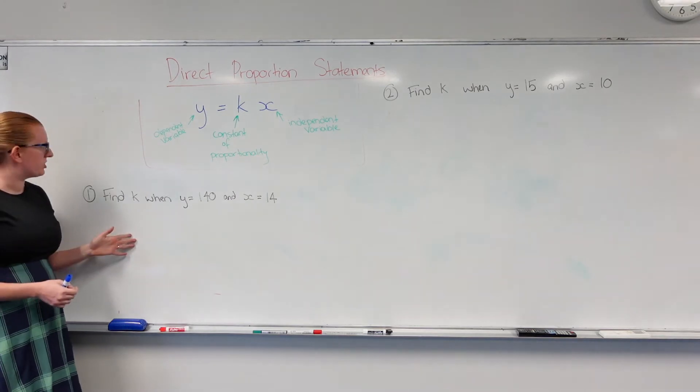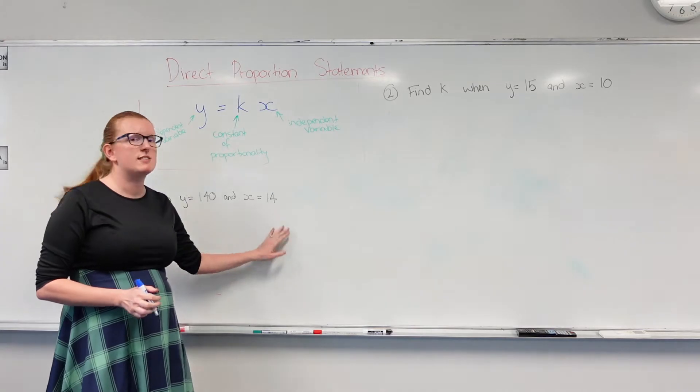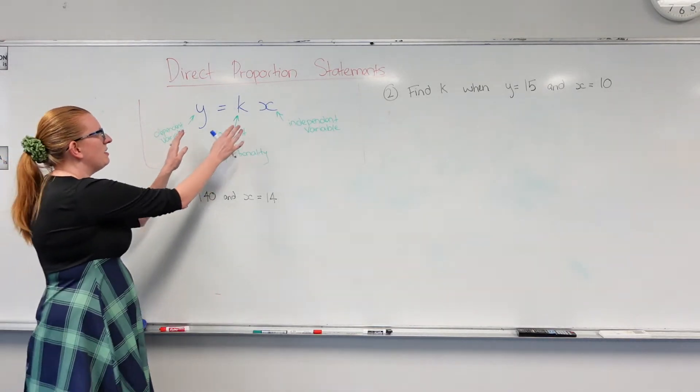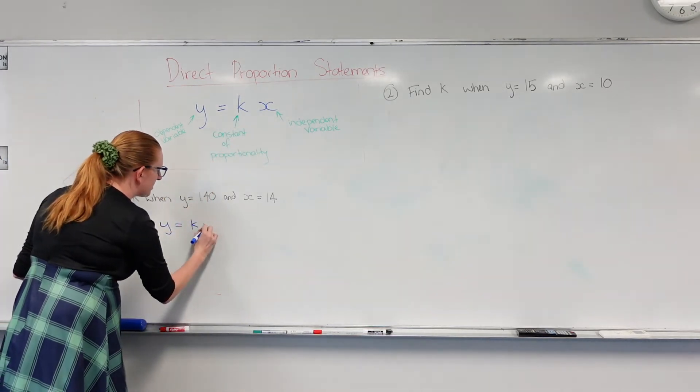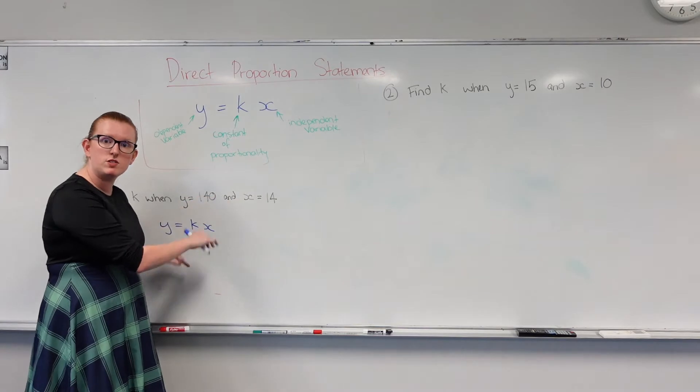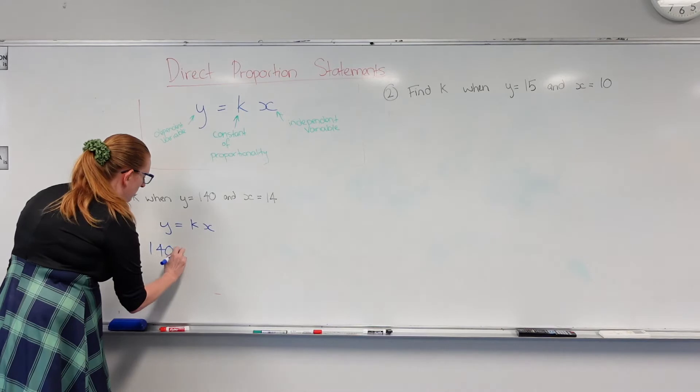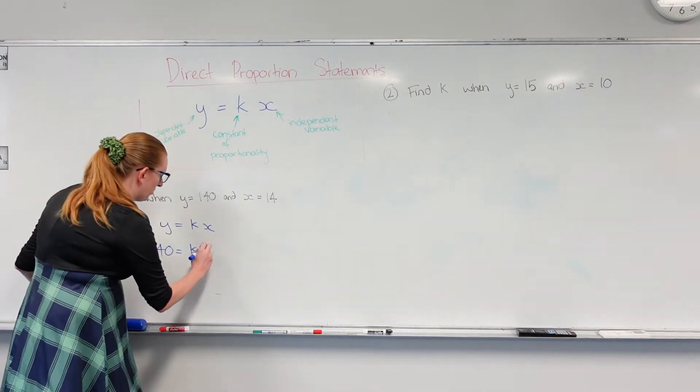Here we have our first question. It says find k when y is equal to 140 and x is equal to 14. So all I'm going to be doing is taking my formula, y equals kx, and I'm going to be subbing values into this formula. So it tells me that y is 140, I don't know what k is, I'm going to leave it as k, and x is 14.